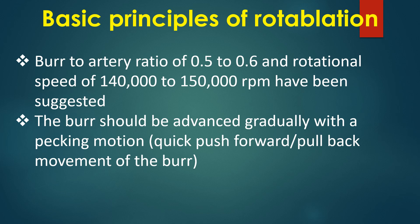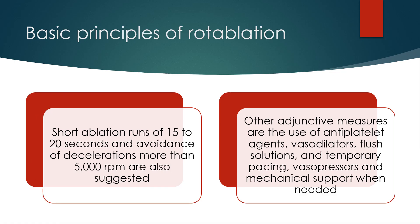The bur should be advanced gradually with a pecking motion — a quick push forward and pull back movement. Short ablation runs of 15 to 20 seconds and avoidance of decelerations more than 5,000 rpm are also suggested. Other adjunctive measures include the use of antiplatelet agents, vasodilators, flush solutions, temporary pacing, vasopressors, and mechanical support when needed.